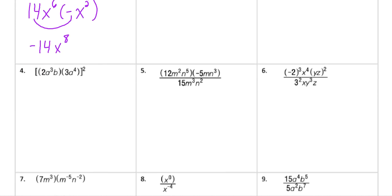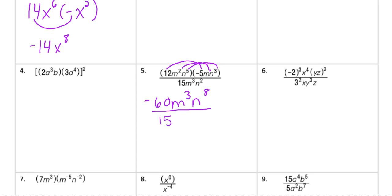For number five, we have a fraction and need to simplify the numerator first. Combining gives −60, and adding the exponents — remembering m has an implicit first power — gives m^3, and n^(5+3) = n^8. Then dividing: −60 ÷ 15 = −4; m^3 over m^3 reduces to one; and n^8 ÷ n^2 = n^6. Final answer: −4n^6.